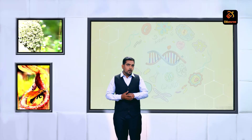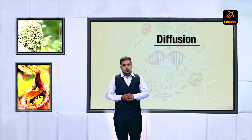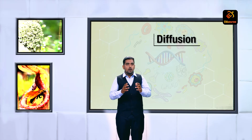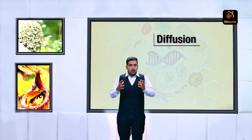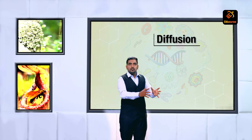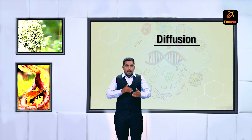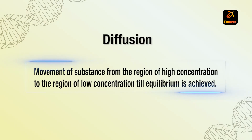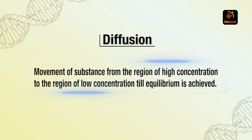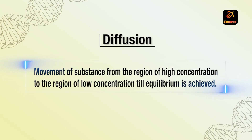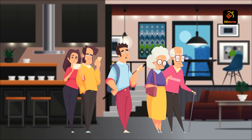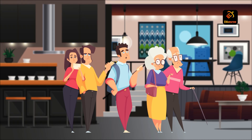The first word is diffusion. What do we mean by diffusion? Diffusion logically means to diffuse — something that moves from high concentration to low concentration. So diffusion can be defined as the movement of substances from the region of high concentration to the region of low concentration till equilibrium is achieved.